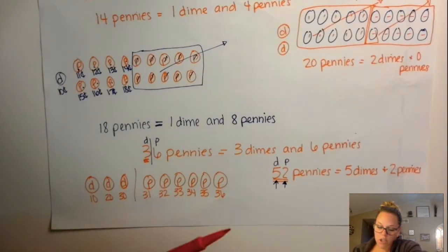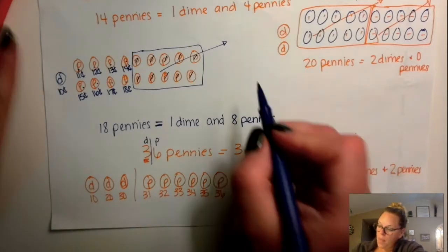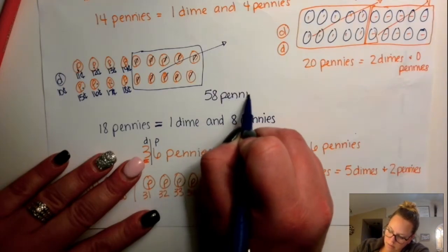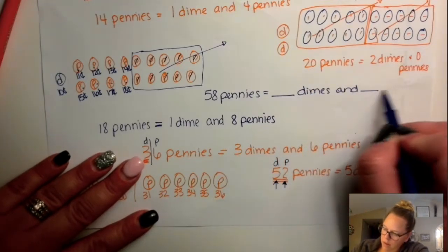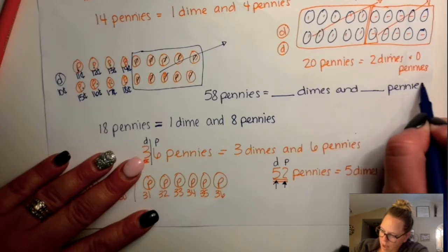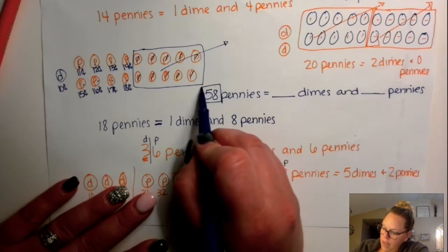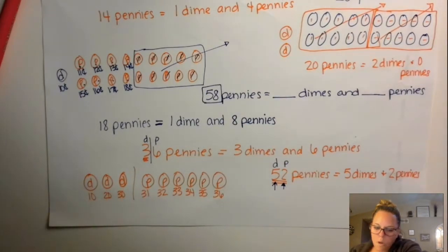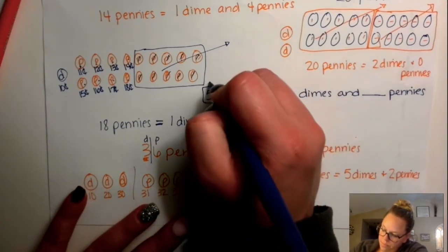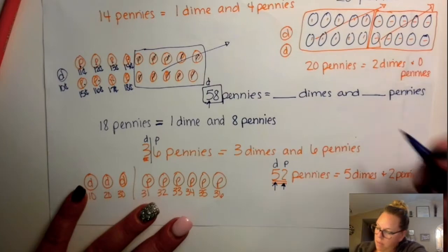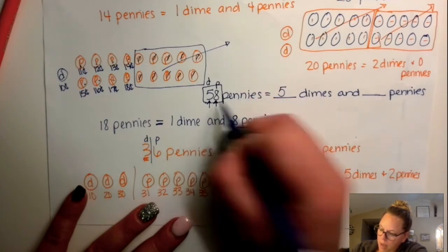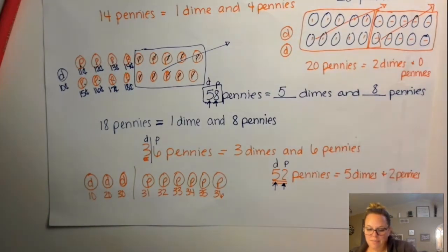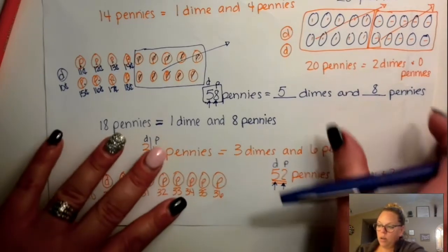So let's take a look at a few more. If I have 58 pennies, that is equal to how many dimes and how many pennies? Take a look at the number 58. Which digit tells you the number of dimes? The digit on the left — five dimes. The digit on the right tells you the pennies — I will have eight. We want to have the fewest possible pennies. That's our goal with this.